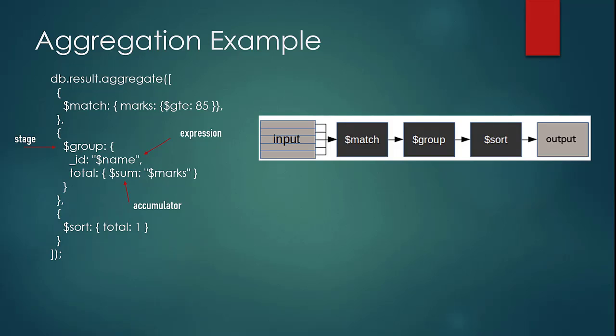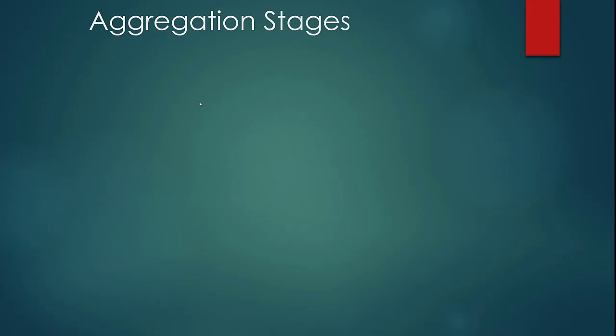In the next stage, you see there is some grouping happening. You are creating a new field underscore id based on an expression, and the expression says it should be based on the field 'name' of your results collection. Then you are creating 'total', which is based on accumulation — it's doing a sum on the marks field. And finally, you have a sort stage which is doing the sort on the total field.